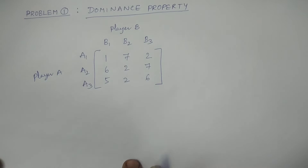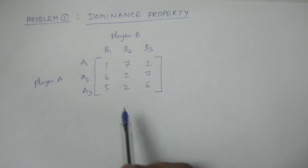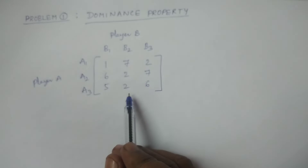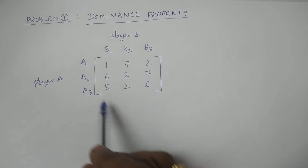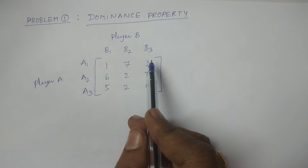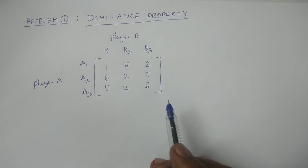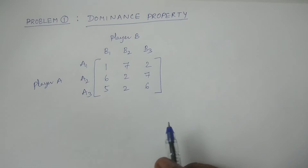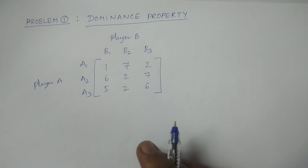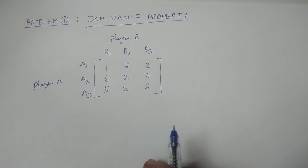In this class, we have a problem with Dominance Properties. Player A has 3 strategies and Player B has 3 strategies, making this a 3 by 3 rectangular game. If you solve the problem with the Dominance Principle, we will first check the problem with the saddle point.